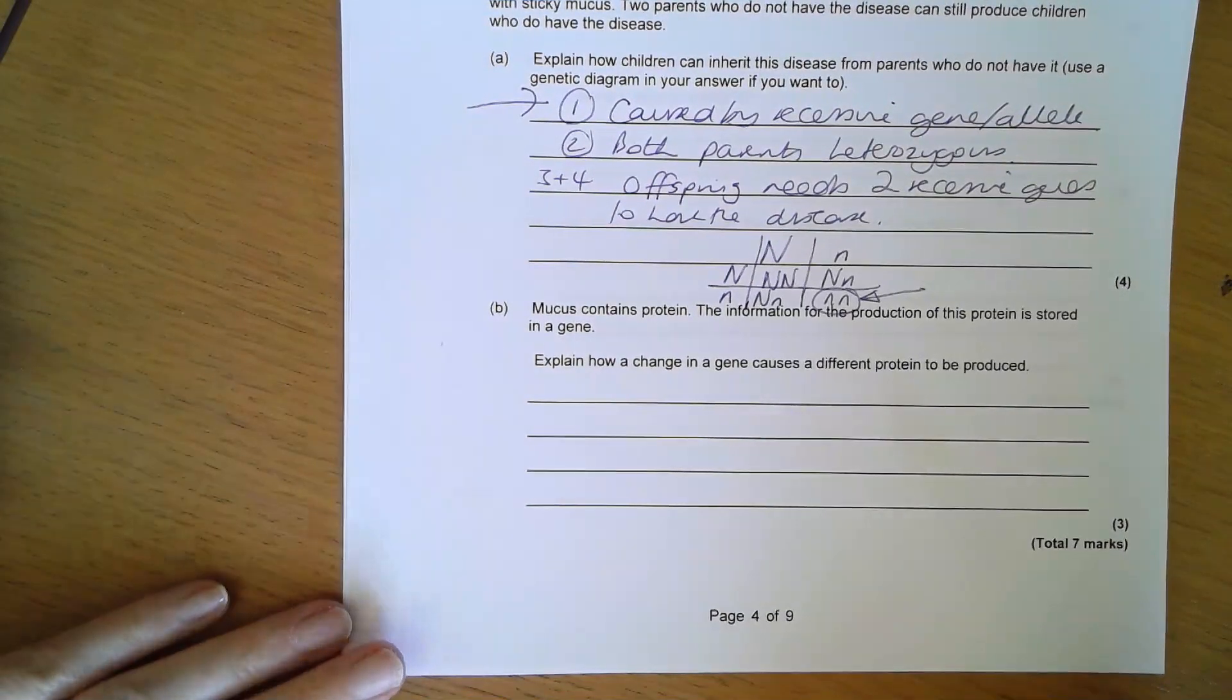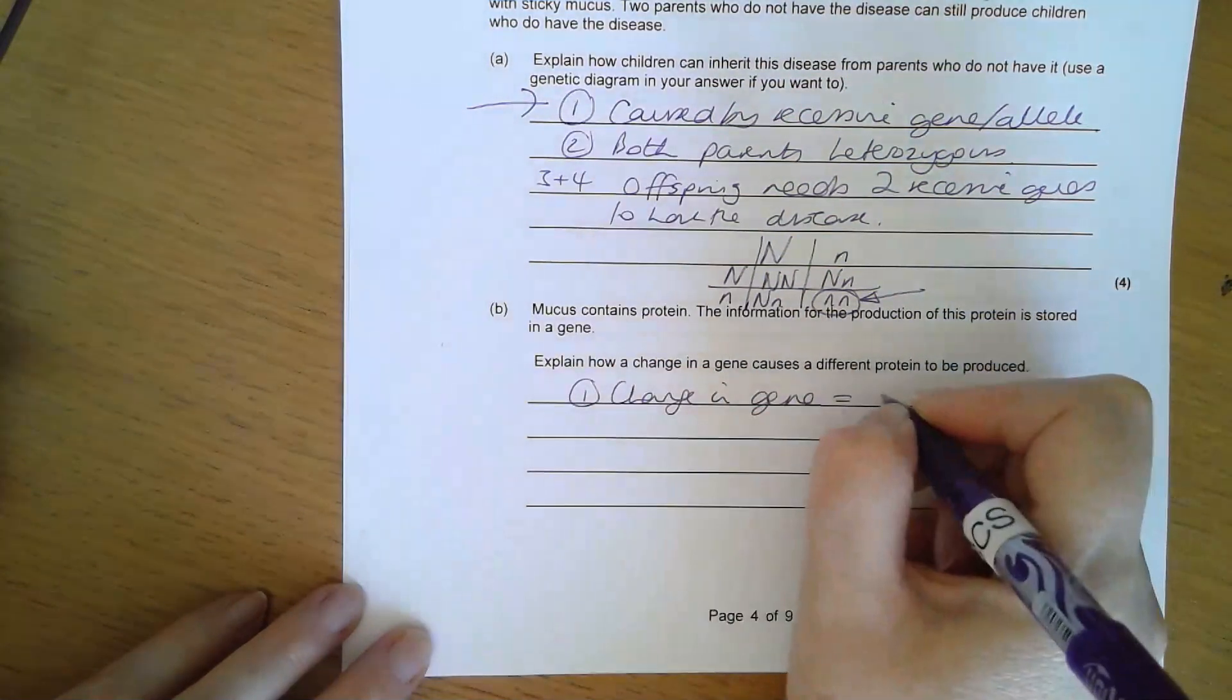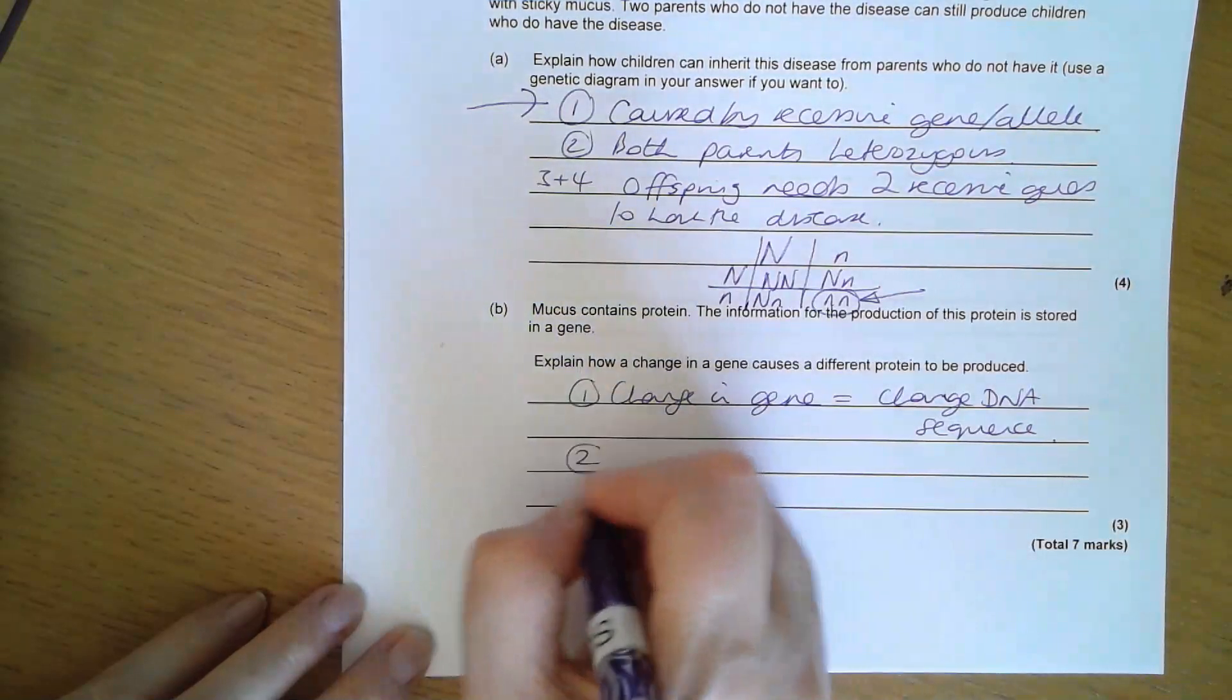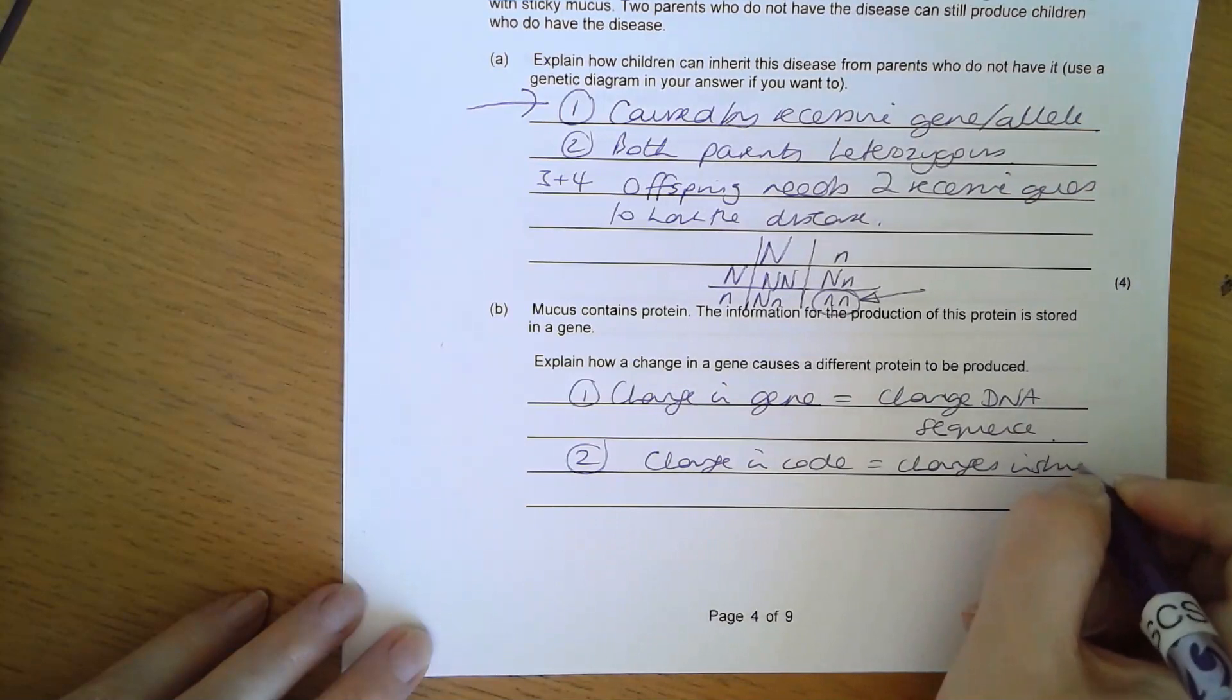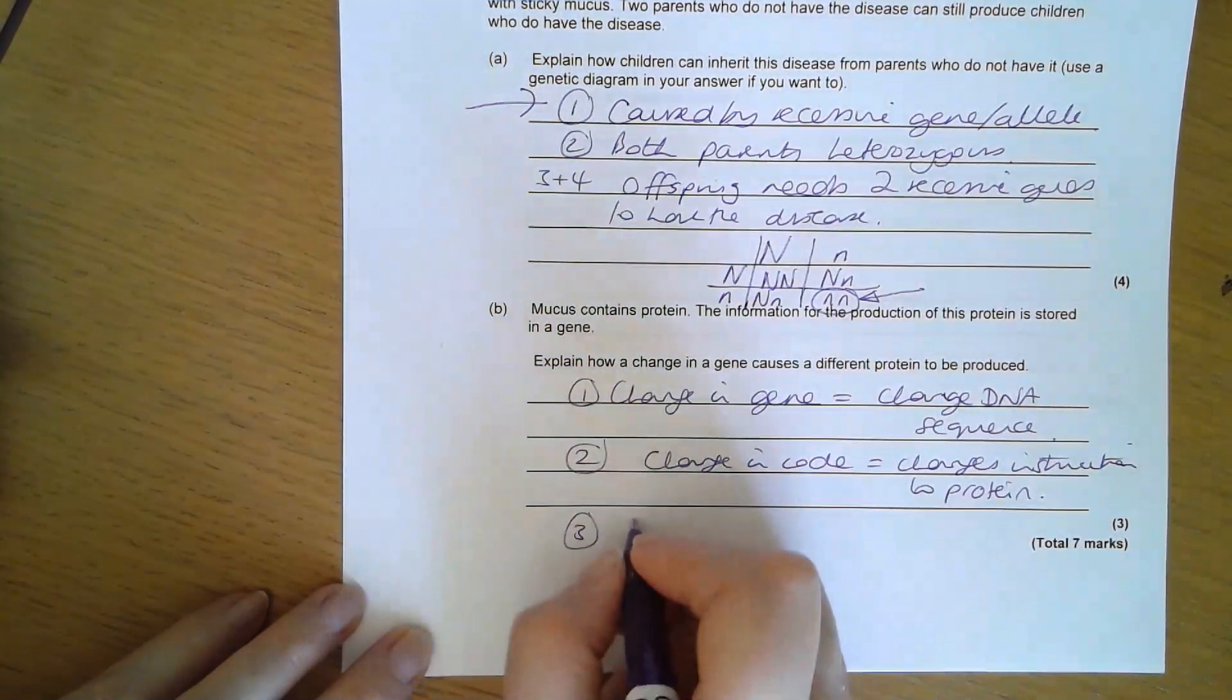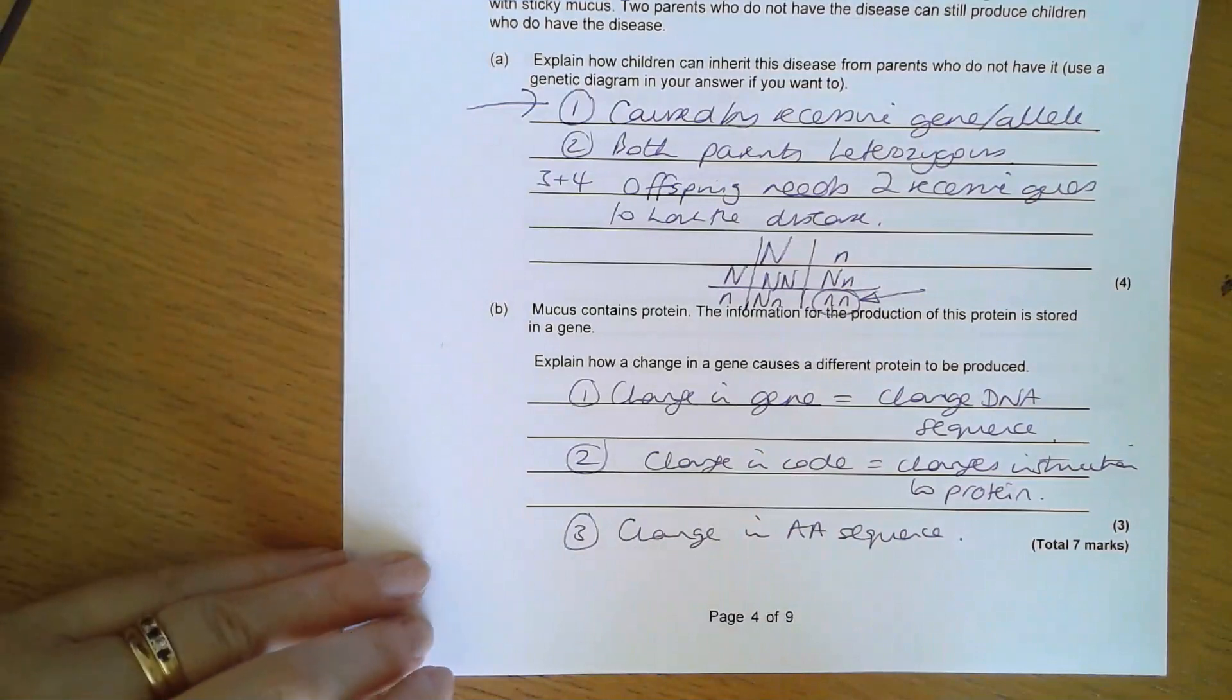Mucus contains protein. The information for the production of protein is stored in a gene. Explain how a change in a gene causes a different protein to be produced. A change in a gene is a change in the DNA sequence or the DNA code. This change in that code therefore changes the instructions, so the code is an instruction to make a protein. It will be a change in the amino acid sequence that is caused, and therefore a change in the protein.